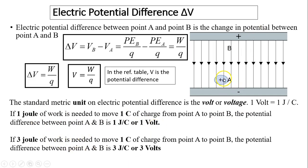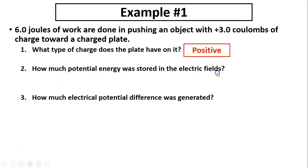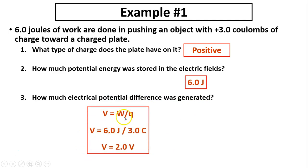If three joules of work is needed to move one coulomb from A to B, the potential difference is three volts. Example: six joules of work are done pushing an object with three coulombs of charge toward a charged plate. The plate must be positive because you have to do extra work to push a positive charge toward it. The potential energy stored equals the work done — six joules. The electric potential difference is W over Q: six joules divided by three coulombs equals two volts.